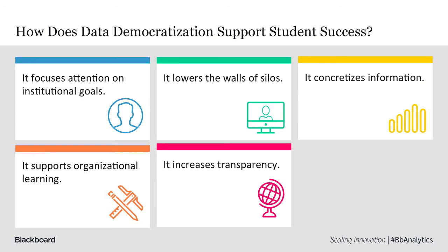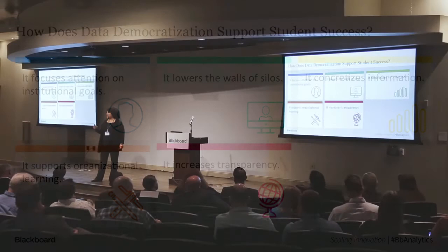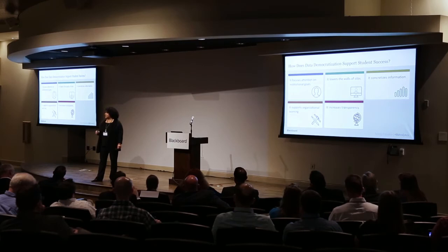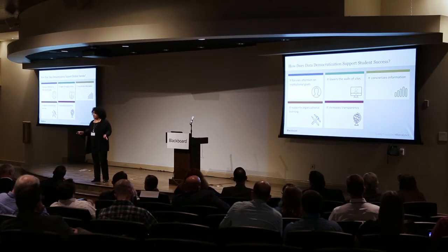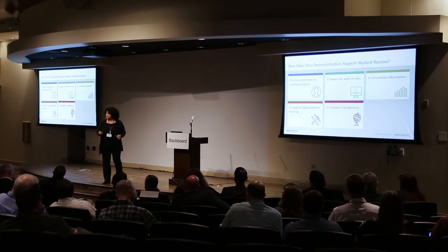It increases transparency. There was a time when only I, my cabinet, someone in IR, or maybe the Deans had access to all the student success data — no more. Access goes all the way down to my groundskeepers. There is complete, role-appropriate transparency, because some people have more ability to drill down than others, but there is transparency at some level of data for everyone on campus.